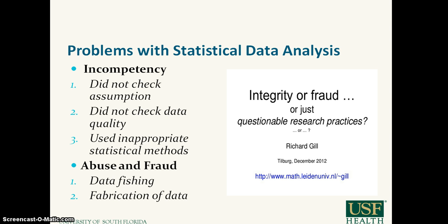Another reason for problems with statistical data analysis are abuses and frauds. For example, data phishing — basically running the data analysis and doing hypothesis tests over and over again until they get p less than 0.05 and get some results they desire. Because of the nature of hypothesis tests, if you use a fixed alpha level such as 0.05 and repeatedly do the statistical test, then the type 1 error rate will go up, approaching 100%.